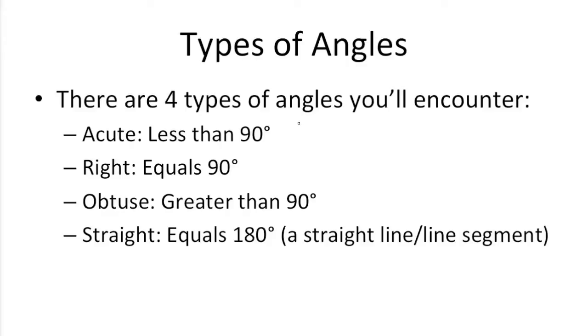Acute angles are less than 90 degrees, so they look something like this. Right angles form 90 degree angles, which are symbolized by this. Obtuse angles are greater than 90, so they're generally wider than this. And straight angles are just straight line segments or straight lines. They equal 180.